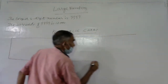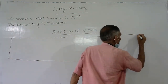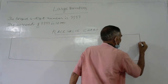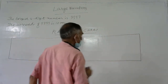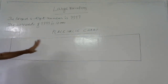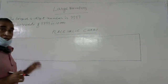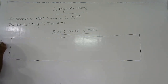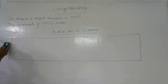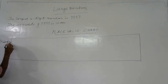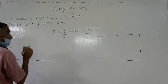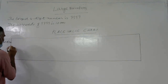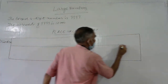Here, you draw a table like this. This chart is divided into periods. In the last lesson, you learned about the thousands place. Now you see that this place value chart is divided into four periods.